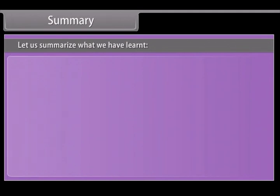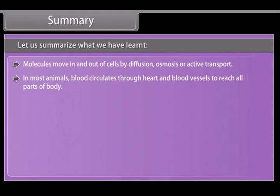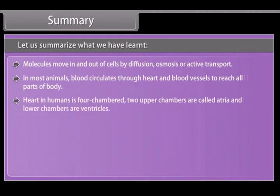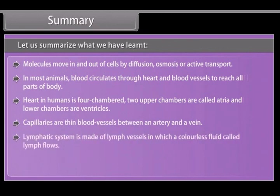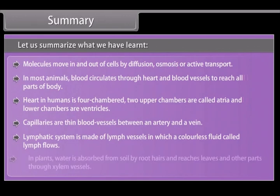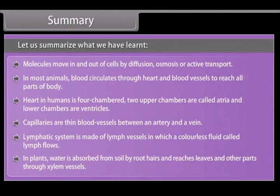Summary. Let us summarize what we have learned. Molecules move in and out of cells by diffusion, osmosis or active transport. In most animals blood circulates through heart and blood vessels to reach all parts of body. Heart in humans is four-chambered: two upper chambers are called atria and lower chambers are ventricles. Capillaries are thin blood vessels between an artery and a vein. Lymphatic system is made of lymph vessels in which a colorless fluid called lymph flows. In plants water is absorbed from soil by root hairs and reaches leaves and other parts through xylem vessels.